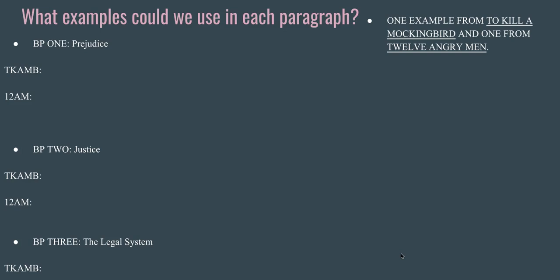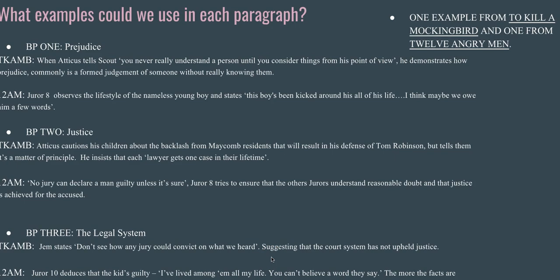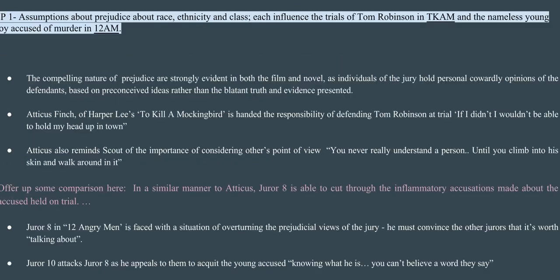In case you didn't come up with anything on your own, here are some examples. For prejudice: Atticus tells Scout 'you never really understand a person' — that really famous quote. Juror 8 says 'the boy's been kicked around all his life; I think maybe we owe him a few words,' so Juror 8 is trying to break down prejudice. For justice: Atticus says each lawyer gets one case in their lifetime but warns things won't necessarily be great. In 12 Angry Men: 'No jury can declare a man guilty unless it's sure.' In To Kill a Mockingbird, Jem says 'I don't see how any jury could convict on what we heard.' The legal system wouldn't have been enough to uphold justice in the face of people like Juror 10 who says 'I've lived among them all my life' — it's only Juror 8 who is able to change their minds.